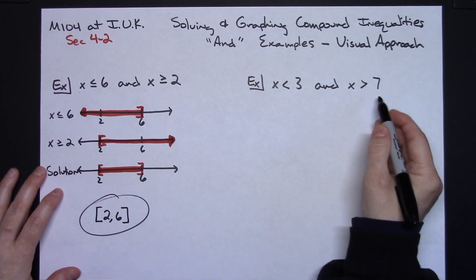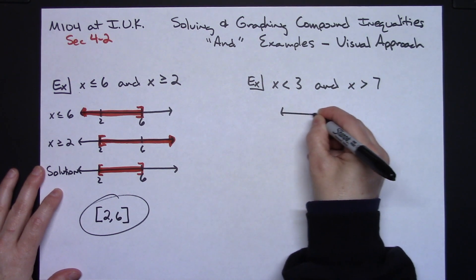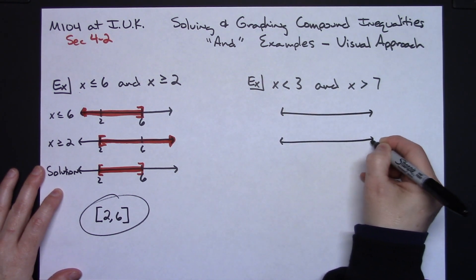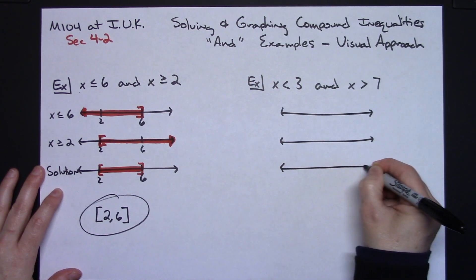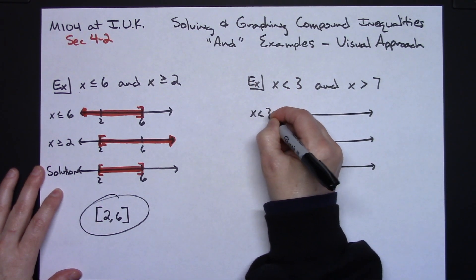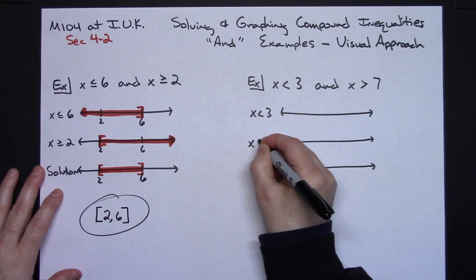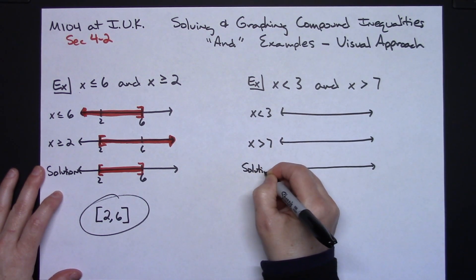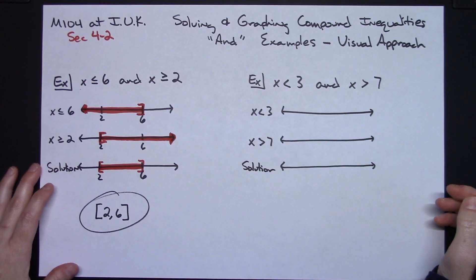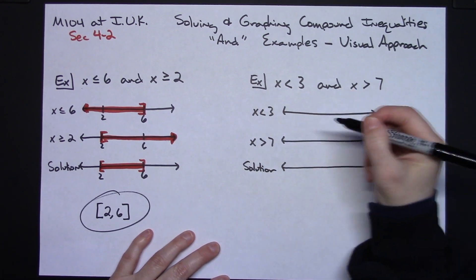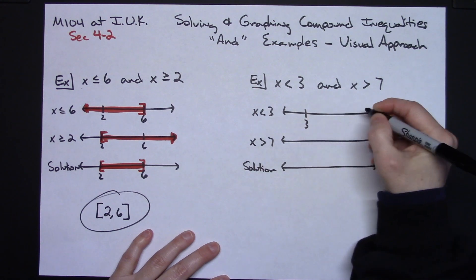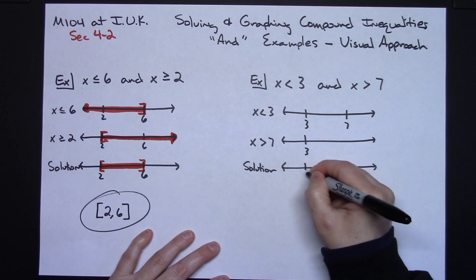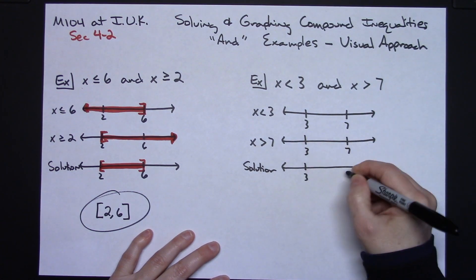Now let's take the same approach for a second example. I'm going to need three number lines of roughly the same length. The top one will graph x is less than 3, the middle one will graph x is greater than 7, and the bottom one will be my solution. The two numbers I'm focusing on are 3 and 7, so I'll place 3 and 7 on all three number lines, lining them up.